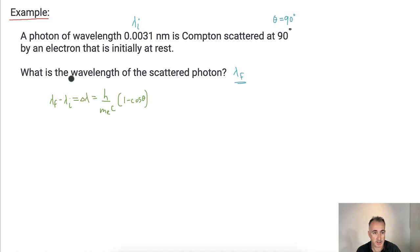Let me try to deal with this to get lambda f by itself. To get lambda f on its own, I just have to add lambda i to the other end. So lambda f is just going to equal h over m_e c times 1 minus cosine of theta, all that plus lambda i, because I moved this lambda i from minus to the right, it becomes a plus.